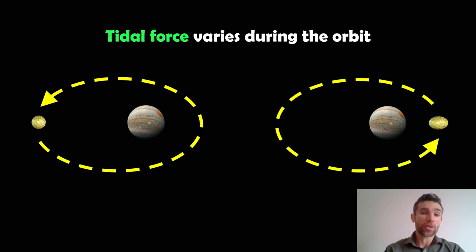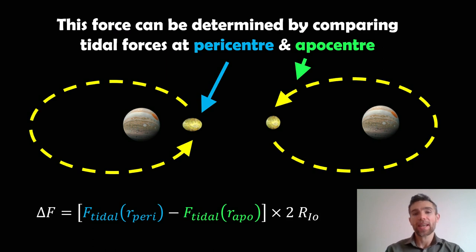So we know the tidal force varies during the orbit. So the total force, what we're going to do, we're going to work out the difference in that tidal force during half an orbital period, because it's going to be at maximum and minimum over half an orbit. So the force can be determined by comparing the tidal forces at the pericentre, that's the closest distance when the tidal force will be greatest, and then at the apocentre when they are furthest away. So now we can write this difference in force, essentially, as the tidal force at the pericentre minus the tidal force at the apocentre times two times the radius of Io, because that's obviously going to be the diameter.